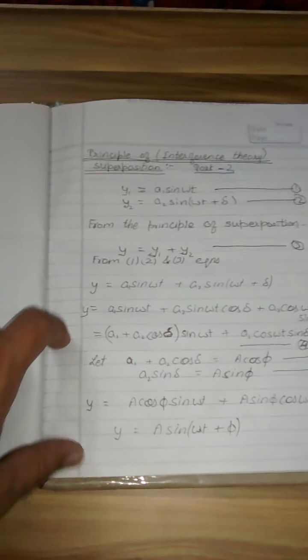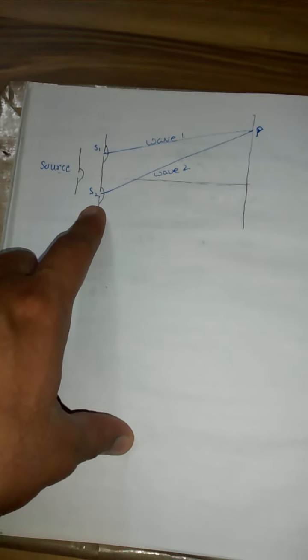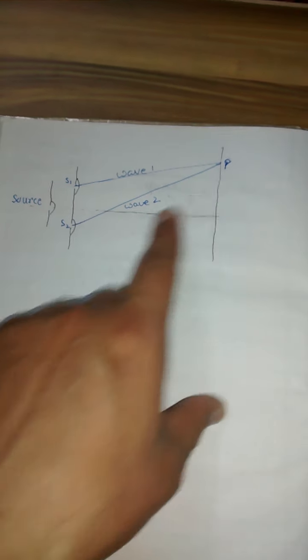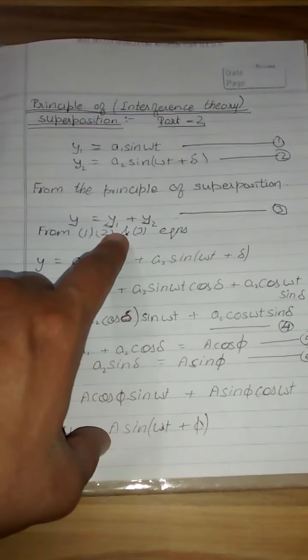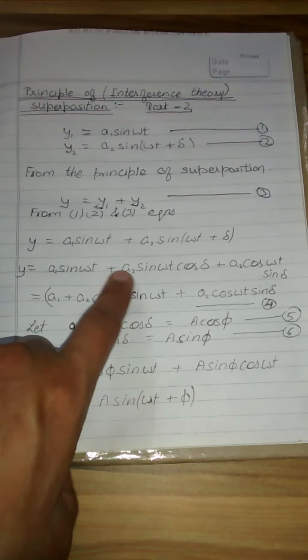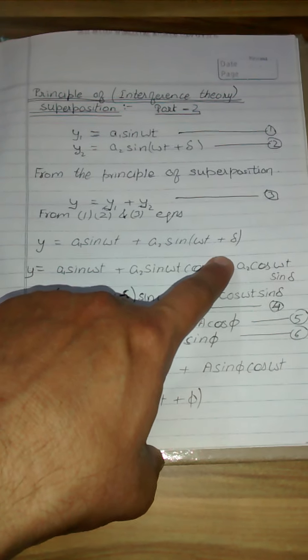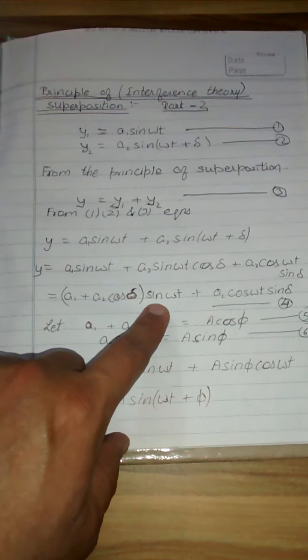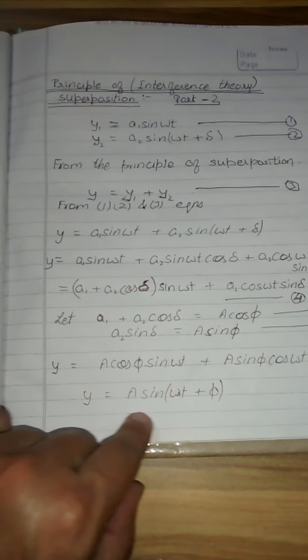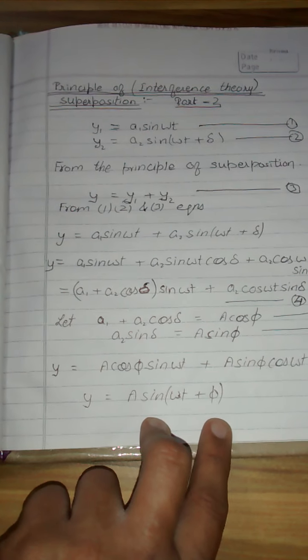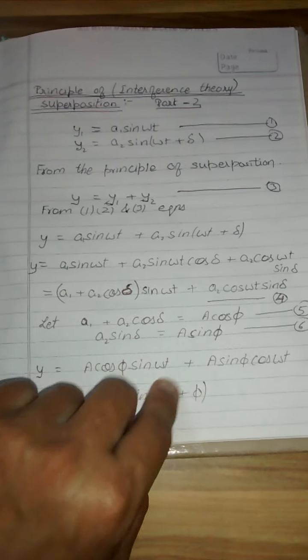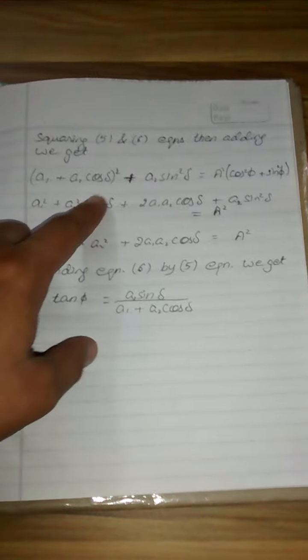Here you can see the mathematical expression of the equation. From the principle of trigonometry, we use the sine A plus B formula, and we use sine omega t. We will get y's value. Then we square and add, so we will get A squared, which is basically the intensity of the light obtaining at P.